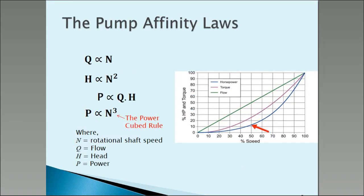We now come straight to the affinity laws, which are the key to understanding how centrifugal pumps work. The first law: Q, the flow, is proportional to speed N. So if we double the speed, we get double the flow. The second law: H, the head or pressure, is proportional to speed squared — related to that centripetal force, the V-squared component or kinetic energy. So pressure is proportional to speed squared. And the power P is proportional to flow times head, and by combining all of these, we get power proportional to N cubed. That's the famous power cubed rule, which applies to wind turbines equally and to pumps as well.